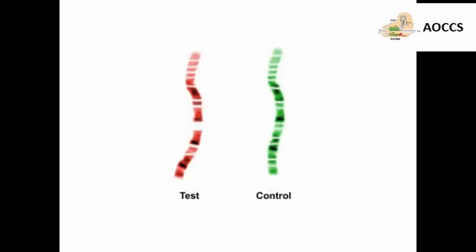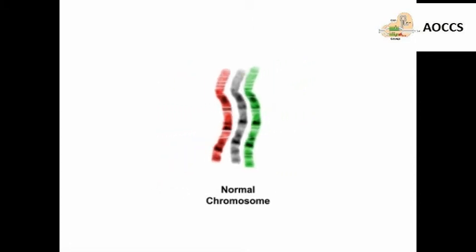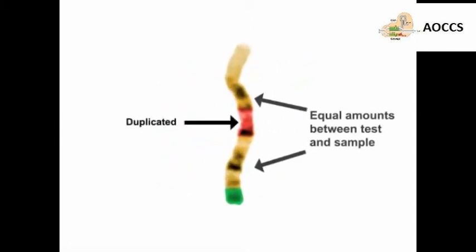The fragmented genomic preparations are then mixed and competitively hybridized to a normal chromosome spread. Colors on the resulting karyotype indicate whether a region is duplicated in the test sample, which generates more fragments to bind the spread, or if the region is deleted, resulting in preferential binding to the more abundant control fragments.